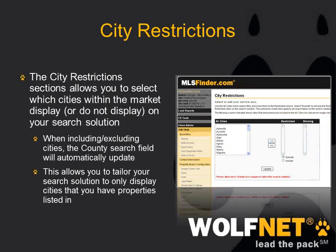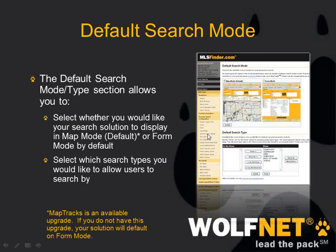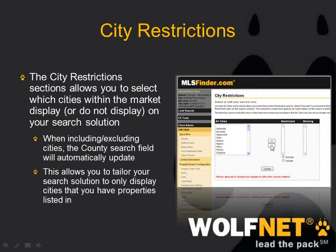The city restriction section is the area where you can either exclude or include cities that you do or do not service. It's mostly used to exclude cities — say they're just too far away from your main service area or you just don't service that area. You can select the cities and move them over with the greater than symbols, and they will go over to the restricted column. They won't show up on your main property search, and any properties listed in those cities won't show up either.